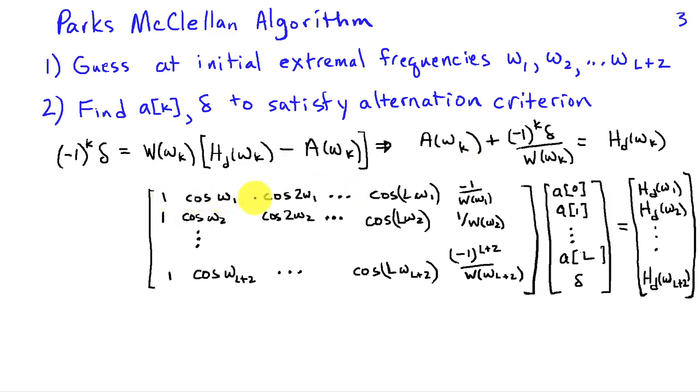So this first row of this matrix is when K is equal to 1 and we have 1 times A0 plus cosine of omega 1 times A1 plus cosine of L omega 1 times A of L minus W of omega 1 times delta and that has to be equal to HD of omega 1. Well, we can write the case K equals 2 involving the second row of this matrix and the second entry in this vector on the right and so on. And then the L plus second row of the matrix represents when K is equal to L plus 2.